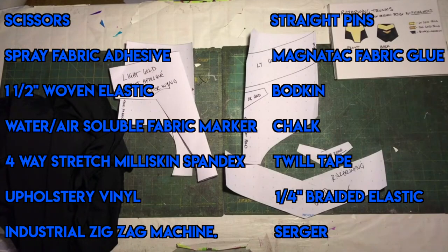In this video, I will be using patterns made by my wife and business partner, Kate Nix. Scissors, straight pins, spray fabric adhesive, magnetac fabric glue, one and a half inch woven elastic, a bodkin to thread the drawstring, chalk, a water or air soluble fabric marker, thin twill tape, four-way stretch milliskin spandex with and without holographic foil coating, a scrap of upholstery vinyl, one quarter inch braided elastic, a serger, and our industrial zigzag machine. You can also use the zigzag stitch on your home sewing machine, of course.